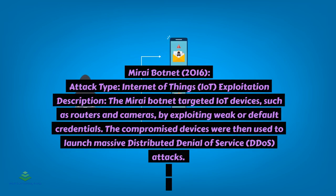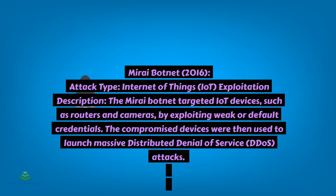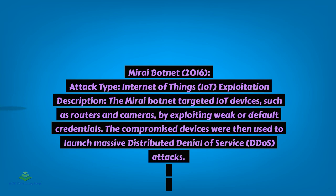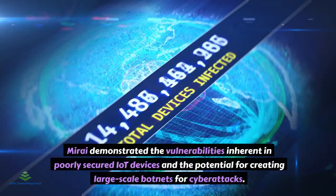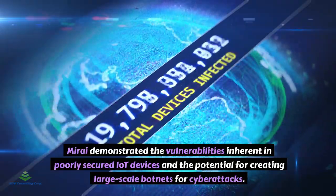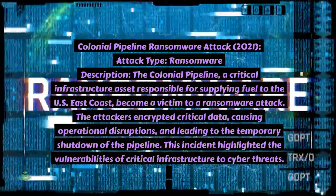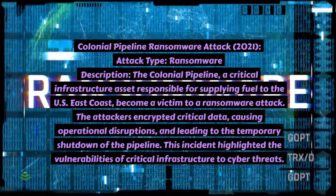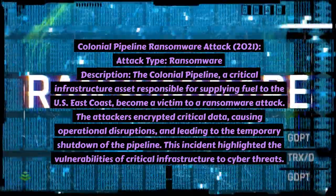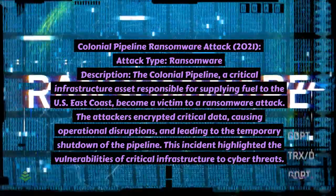Mirai botnet, 2016 — attack type: Internet of Things (IoT) exploitation. The Mirai botnet targeted IoT devices such as routers and cameras by exploiting weak or default credentials. The compromised devices were then used to launch massive distributed denial-of-service (DDoS) attacks. Mirai demonstrated the vulnerabilities inherent in poorly secured IoT devices and the potential for creating large-scale botnets. Colonial Pipeline ransomware attack, 2021 — attack type: ransomware. The Colonial Pipeline, a critical infrastructure asset responsible for supplying fuel to the U.S. East Coast, fell victim to a ransomware attack. The attackers encrypted critical data, causing operational disruptions and leading to the temporary shutdown of the pipeline, highlighting the vulnerabilities of critical infrastructure to cyber threats.